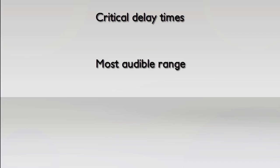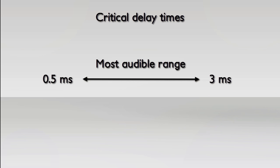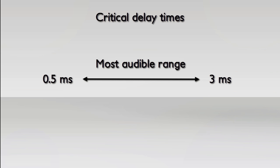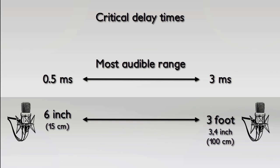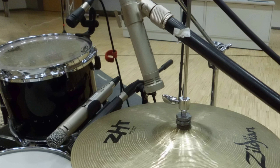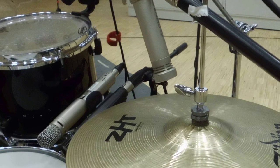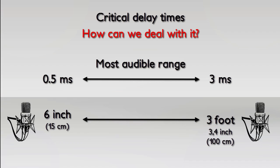Another important insight of the study is the fact that different sound sources have different perception levels. A snare, for example, has the highest audibility of the comb filter distortions, whereas a piano has a 5 dB lower perception threshold. Furthermore, the highest threshold of perception occurs between a delay time of 0.5 ms and 3 ms, or a microphone distance between 6 inches and 3 feet. Imagine what this means to your average drum recording.